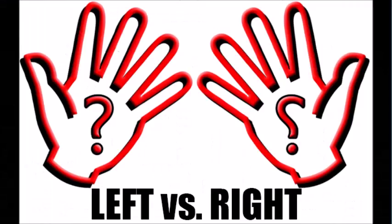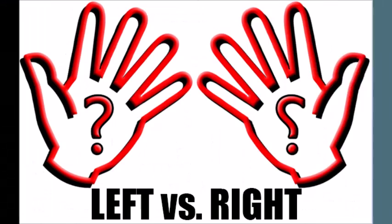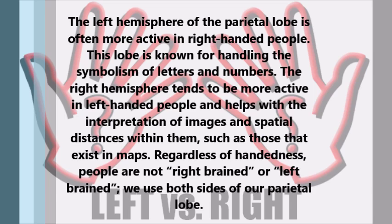The left hemisphere of the parietal lobe is often more active in right-handed people and is known for handling the symbolism of letters and numbers. The right hemisphere tends to be more active in left-handed people and helps with the interpretation of images and spatial distances within them, such as those that exist in maps.